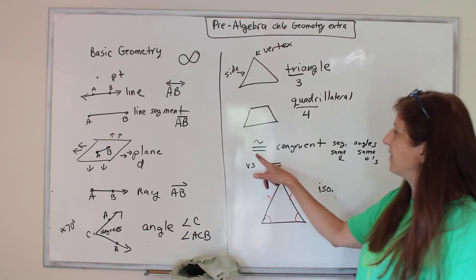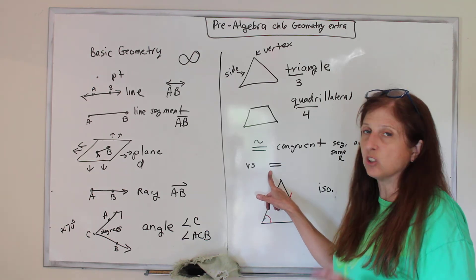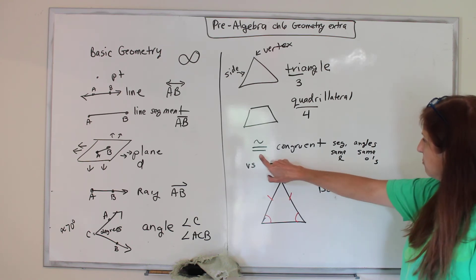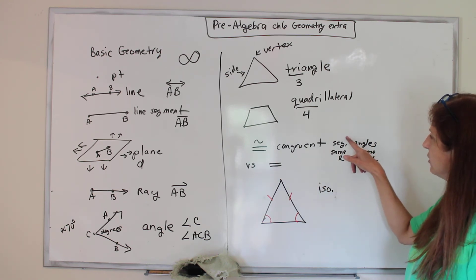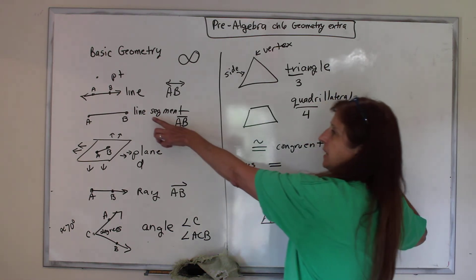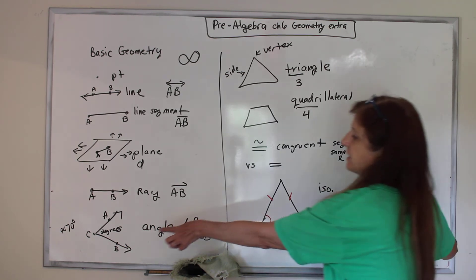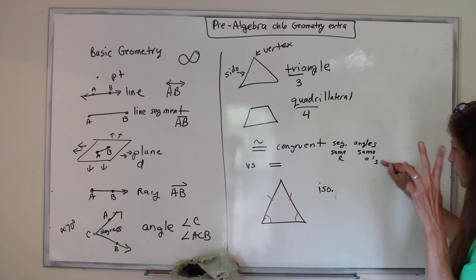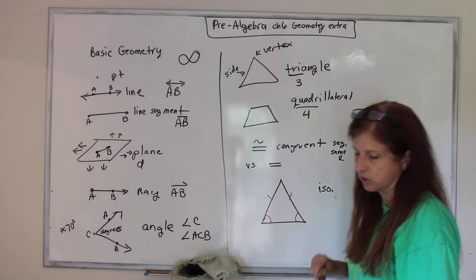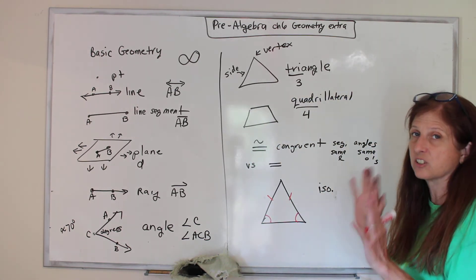A lot of times we say things are congruent in geometry instead of equals, and you'll learn more about that when you get to geometry year after next, but that's the symbol for congruent. And so if two line segments like this have the same length, they are said to be congruent. If two angles have the same number of degrees, they are said to be congruent to the same.